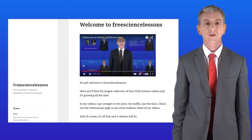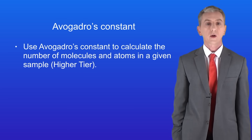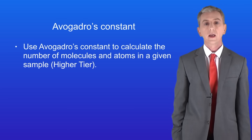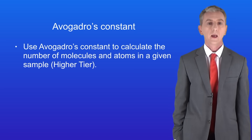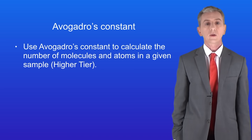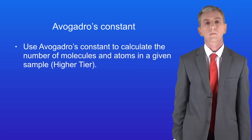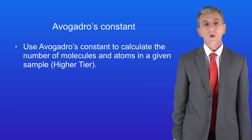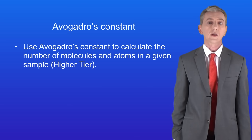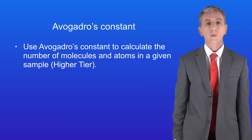Hi and welcome back to freesciencelessons.co.uk. By the end of this two-part video you should be able to use Avogadro's constant to calculate the number of molecules and atoms in a given sample. This work applies only to higher students, so if you're doing foundation you don't need to do this. Now I'm going to be honest with you, some of this is pretty challenging. Please trust me that you can do this and don't give up. You might need to watch the video a couple of times.